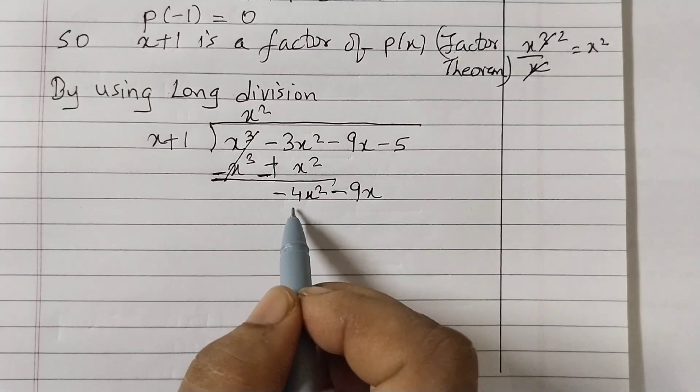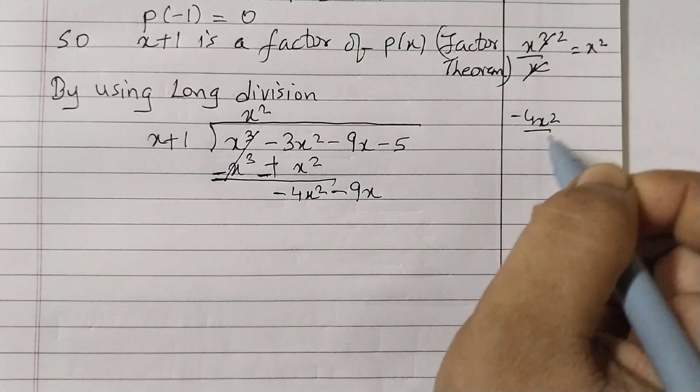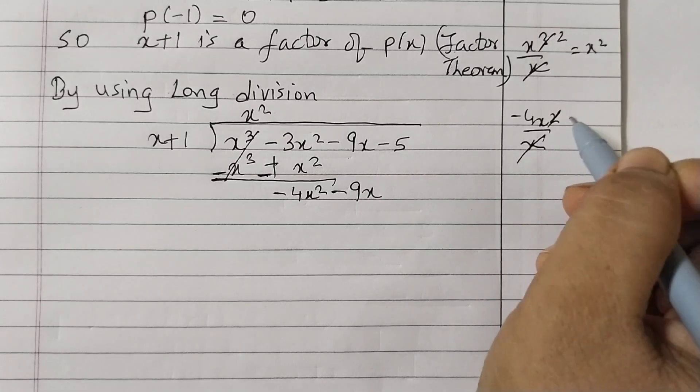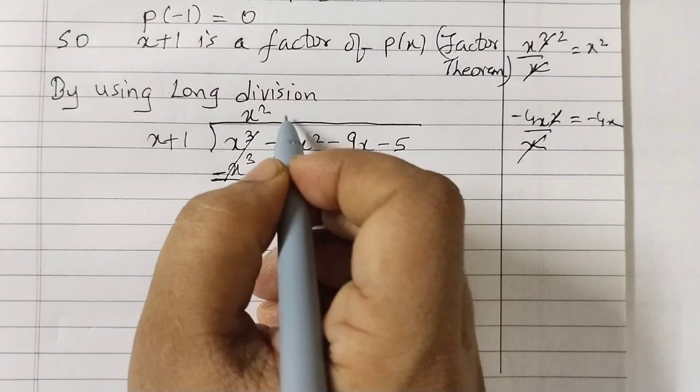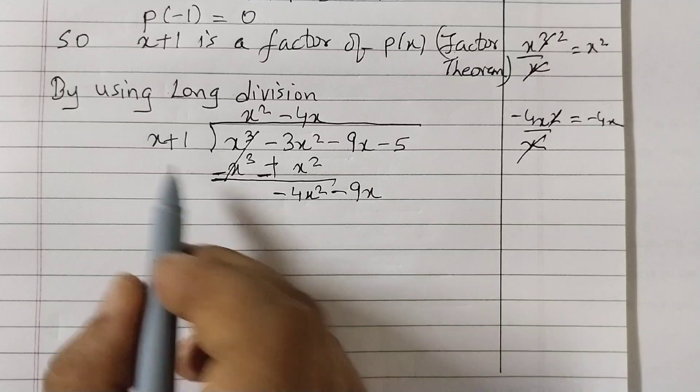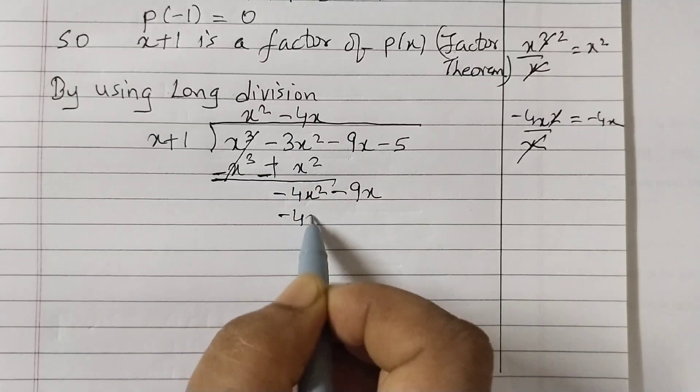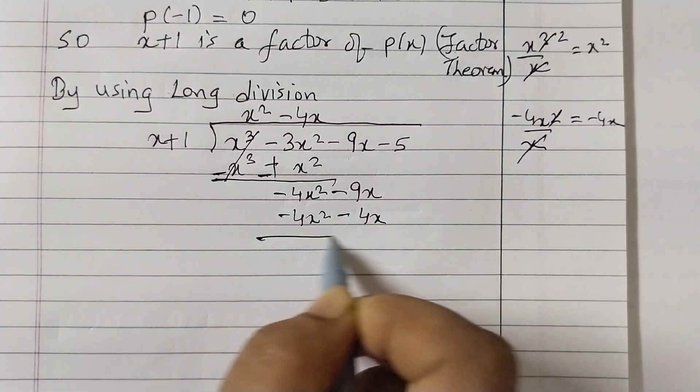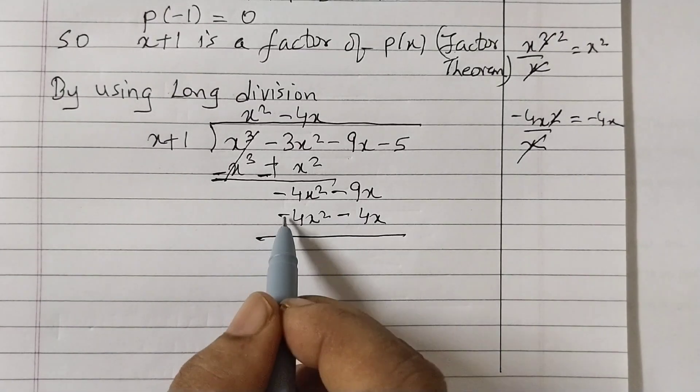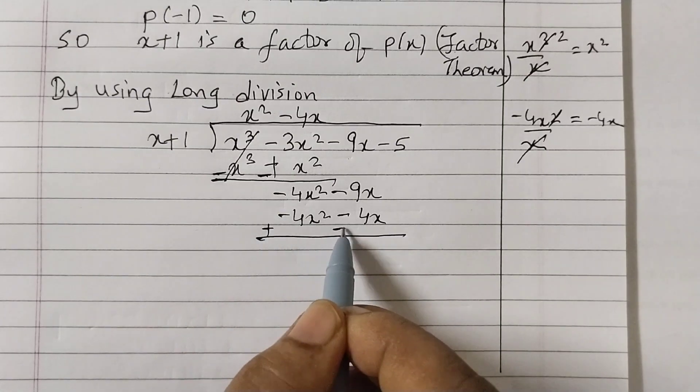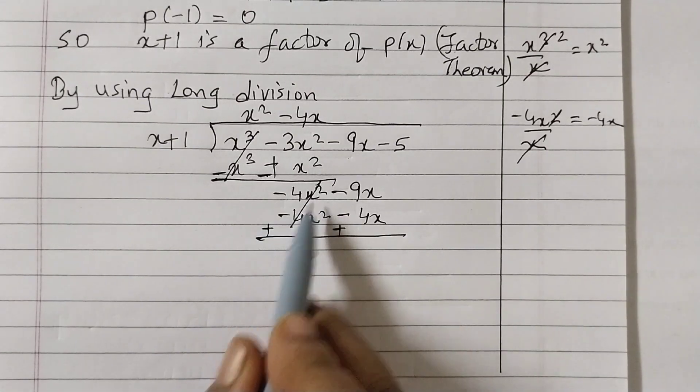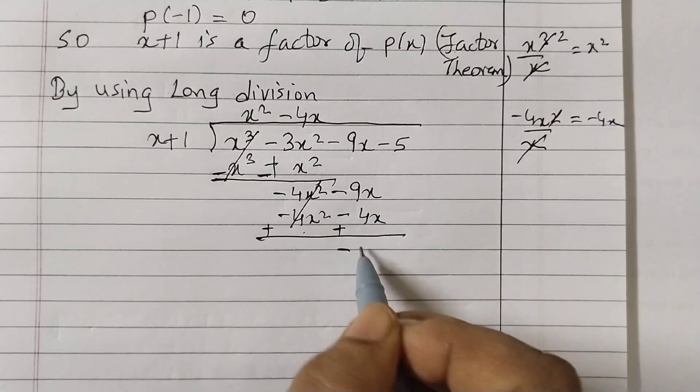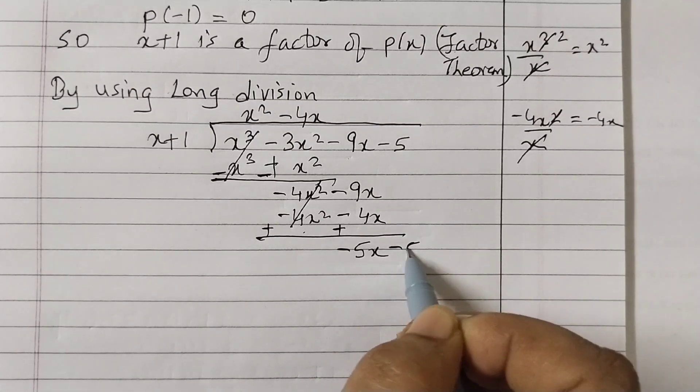Same step you need to follow. So minus 4x squared divided by x. The divisor remains the same. x cancels out minus 4x. Multiply x into minus 4x: minus 4x squared, plus into minus minus 4x. Subtract. Cancels out, minus 9x plus 4x minus 5x. Next term bring down.